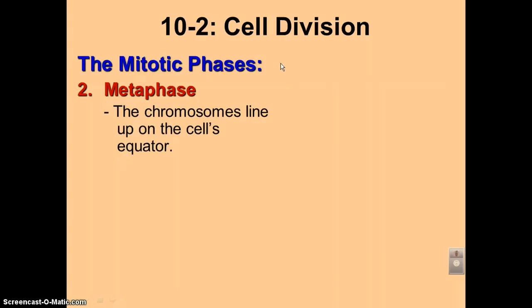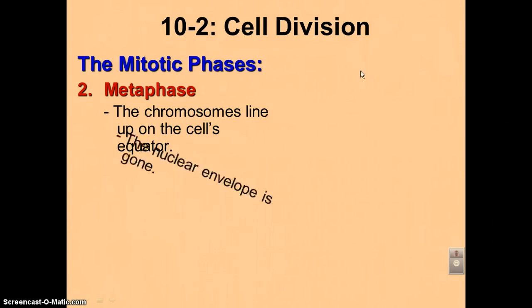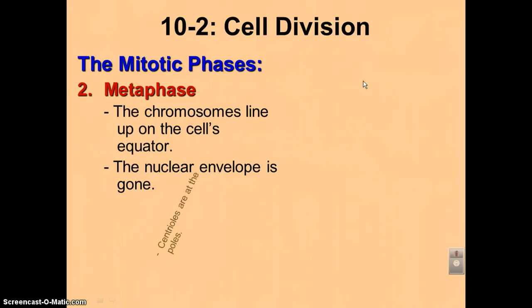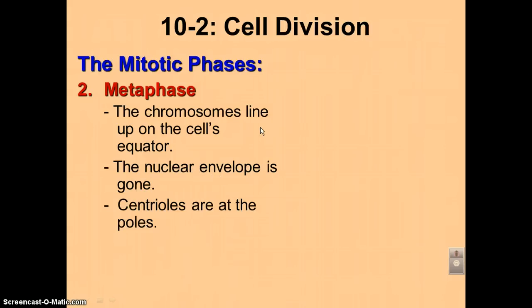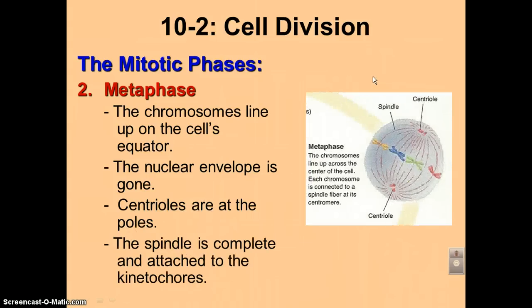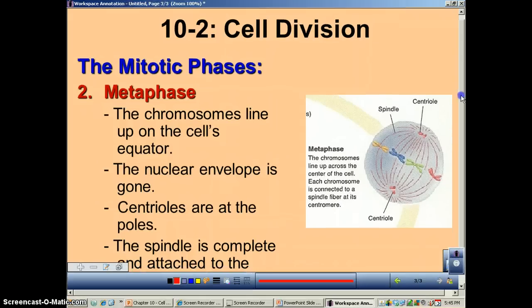The defining feature of metaphase is that the chromosomes line up on the equator — they line up in the middle of the cell. The nuclear envelope at this point is completely gone. The centrioles are all the way at the poles; remember, the poles just means opposite sides. And then the spindle fibers are completely formed and they are attached to the kinetochores.